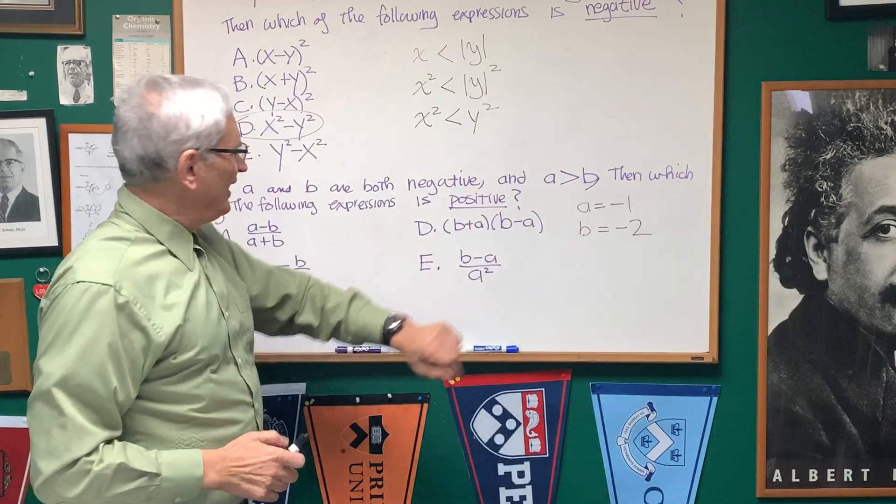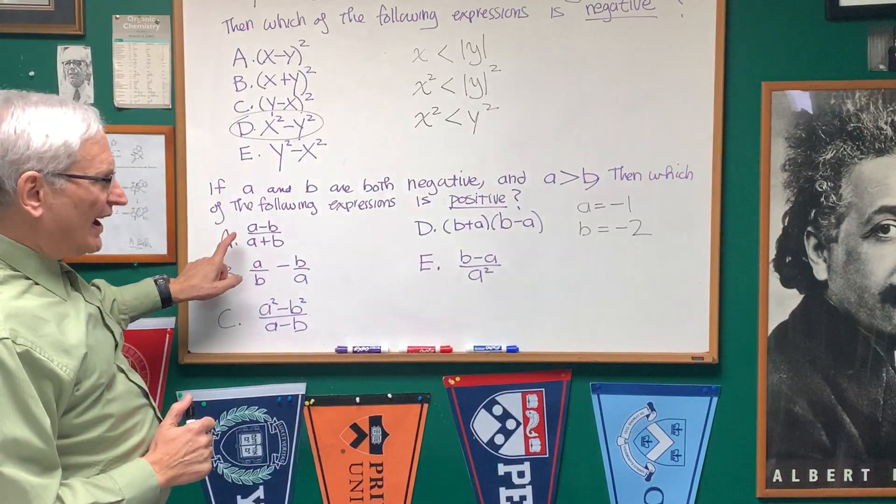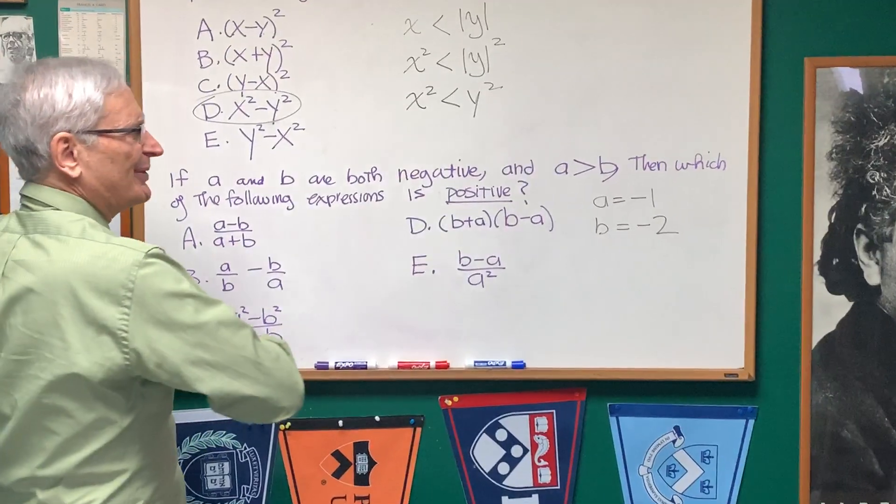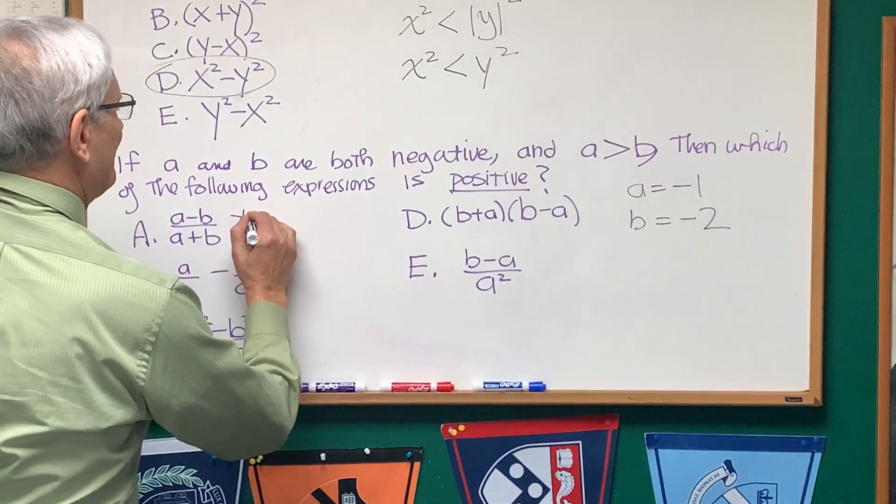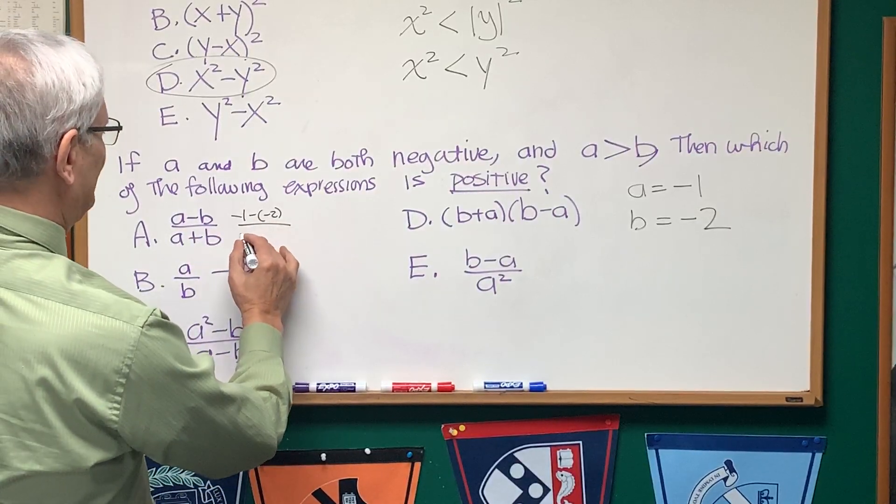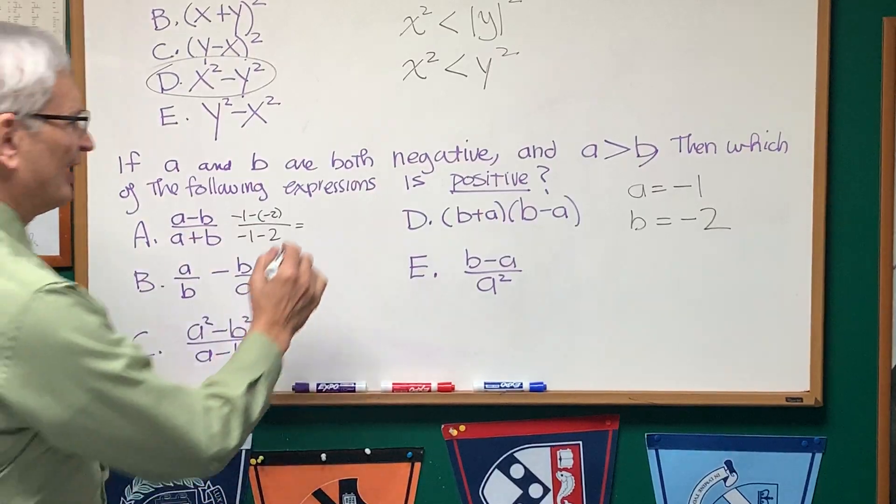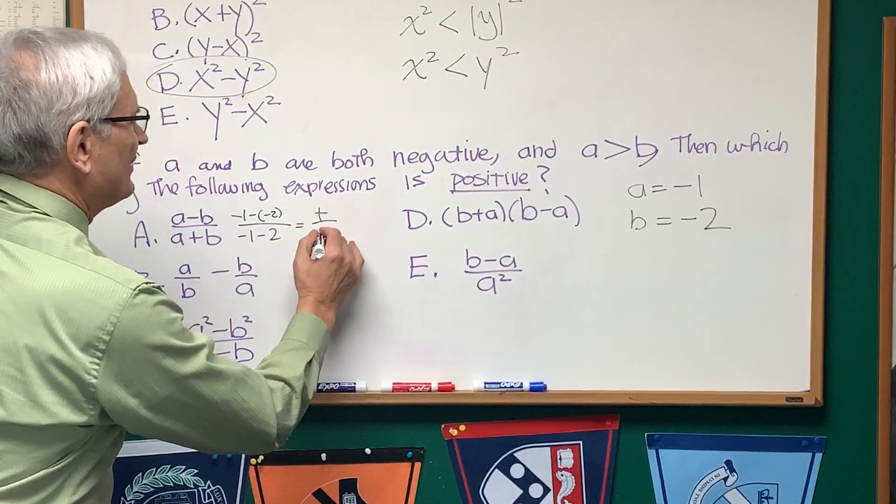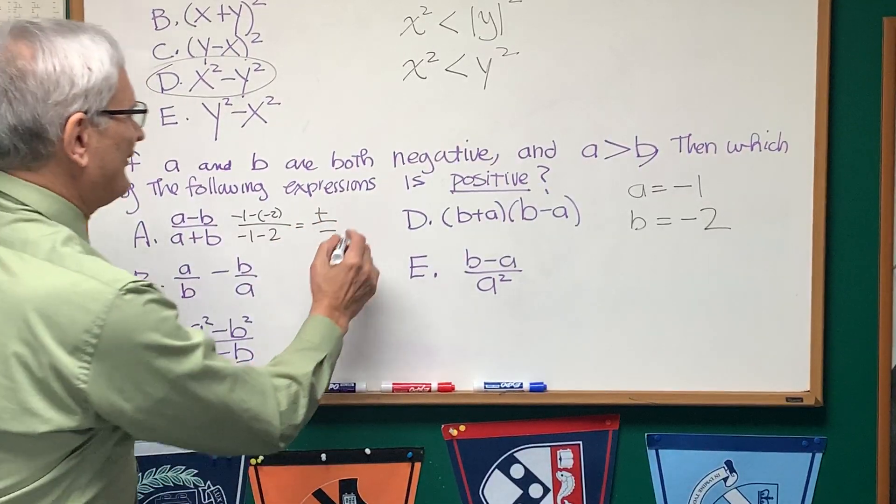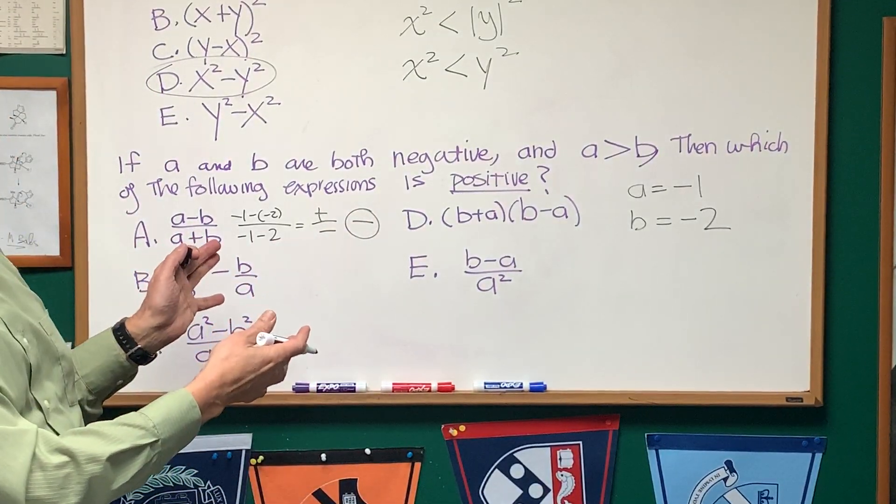Okay, and I think that'll make the analysis of each one of these expressions a little easier. Well, A-B is going to be -1 minus -2, over A+B, which is going to be -1 plus -2. You can see the numerator here is going to be positive, the denominator is going to be negative, and therefore this whole expression is going to be negative. It's not the first expression.